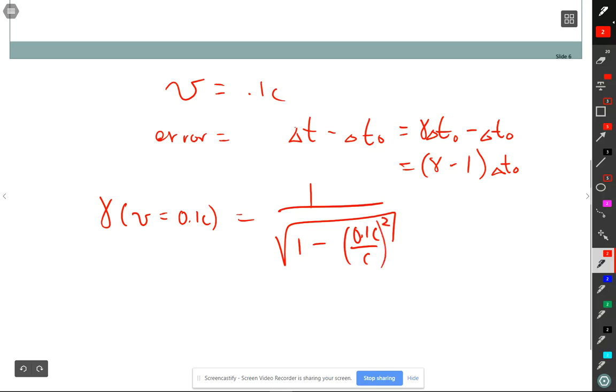Let's just do a quick calculation. How much error do you have if you're at 0.1C? So if I want to find my error, my error is going to be gamma minus one times delta T_0, or my percent error will just be gamma minus one. So let's calculate gamma for V equals 0.1C. So if we do that, 0.1 squared is 0.01, 1 minus 0.01 is 0.99. Square root of 0.99 is 0.994, and then one over that is 1.005. So 1.005 minus one is 0.005 or 0.5%. So if you're at one-tenth the speed of light, then your error is 0.5%, and that's generally what we're going to consider our threshold.